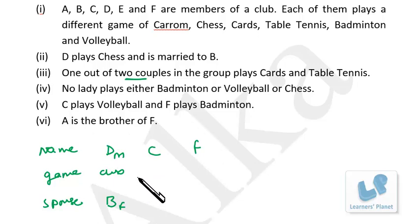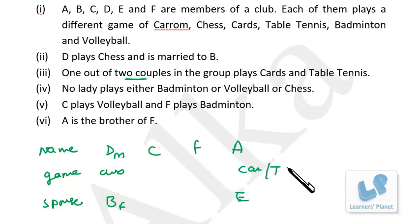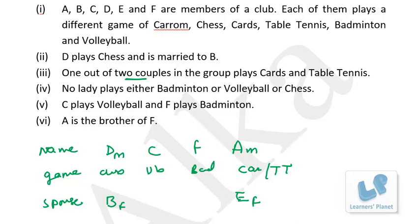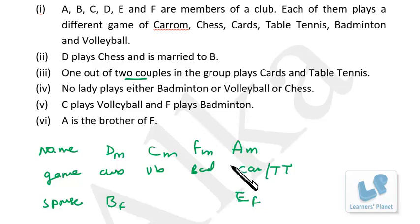A is the brother of F, so A is male, meaning E is female. C plays volleyball and F plays badminton — both are males. The remaining couple must play cards and table tennis, but between A and E we don't know who plays cards and who plays table tennis. This much information is available, and whatever questions are asked can be answered very easily based on this arrangement.